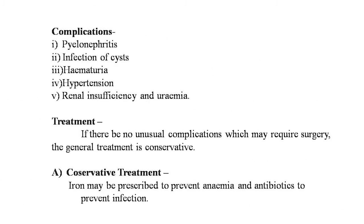Complications of polycystic kidney include pyelonephritis, infection of the cyst, hematuria, hypertension, renal insufficiency, and uremia. Treatment: if there are no unusual complications requiring surgery, the general treatment is conservative. The patient is placed on a low-protein diet and is required to take large quantities of fluid — 3000 ml or more per day. Strenuous activity should be stopped. Iron may be prescribed to prevent anemia, and antibiotics to prevent infection. When the patient is in absolute renal insufficiency, treatment for uremia is required.